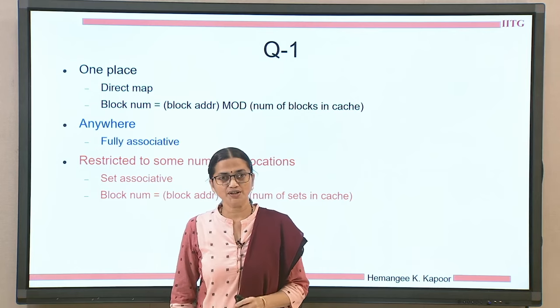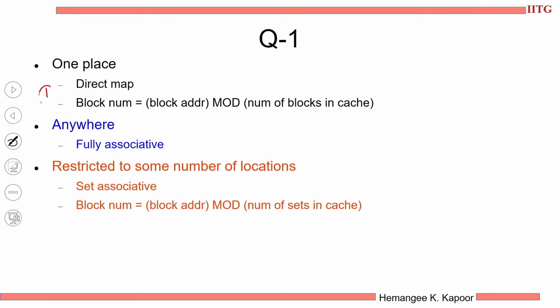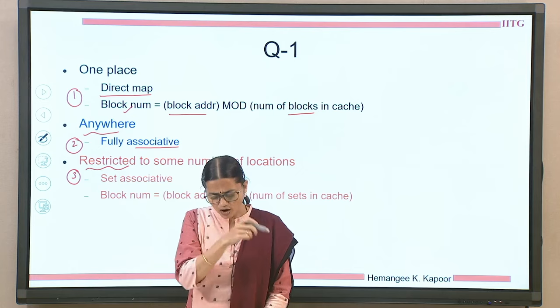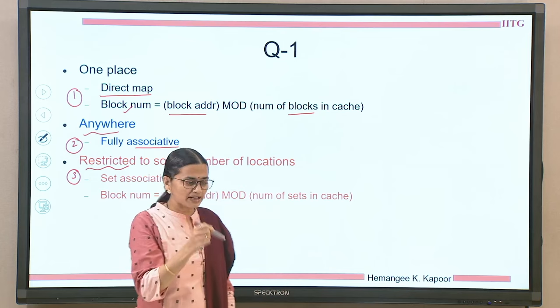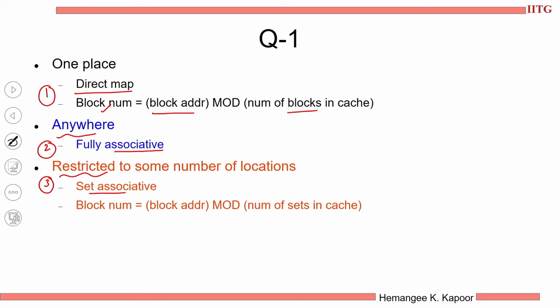Continuing that analogy to the cache, we have three options. The first, with a single choice, is called a direct map cache — you take the block address and mod it with the number of blocks in the cache to find where it sits. The second, where a block can sit anywhere, is called a fully associative cache. The third, with limited choice like a lab group, is called a set associative cache — take the block number and mod it with the number of sets.